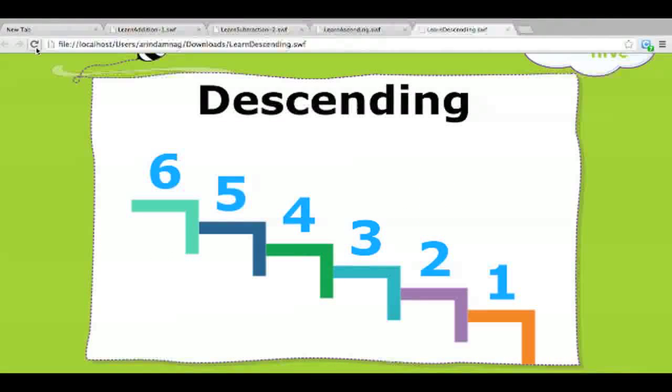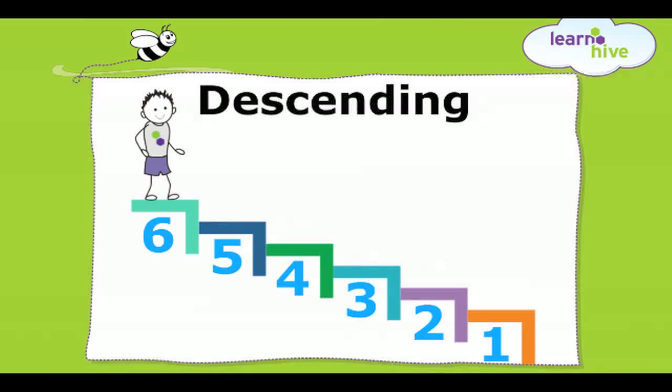Now let's look at descending numbers. Here is our friend Dom again. He is on step number six and has to come down to step number one.